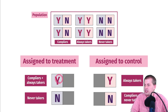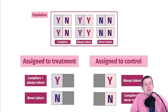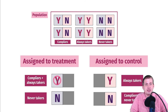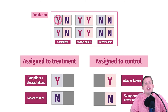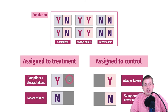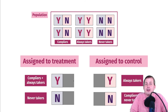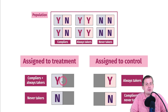Person number one was assigned to the treatment group and did it. Does that mean they're a complier? Not necessarily — they could be a complier or an always taker; we have no idea what's in the gray box. A person assigned to treatment who does the treatment could be either an always taker or a complier. We can't tell for sure.